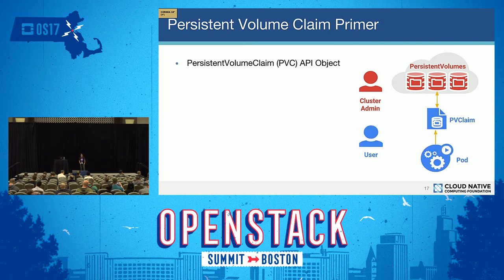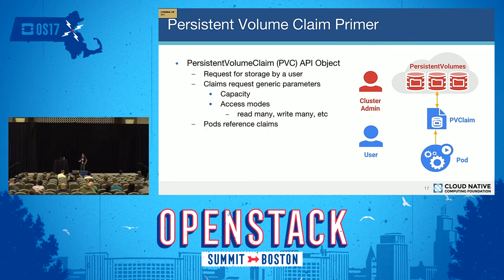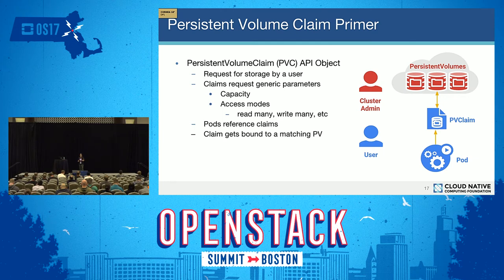Instead, in your pod spec, the user specifies a persistent volume claim — a request for storage by a user. Inside that claim, you specify generic parameters for storage such as capacity or access modes. The system will find a matching persistent volume to bind that claim to, and through this level of indirection, your pod ends up mounting specific volumes in the cluster.